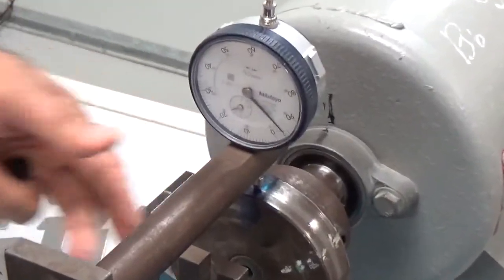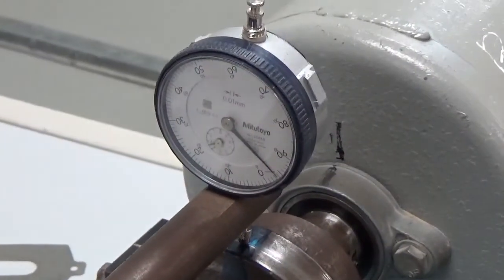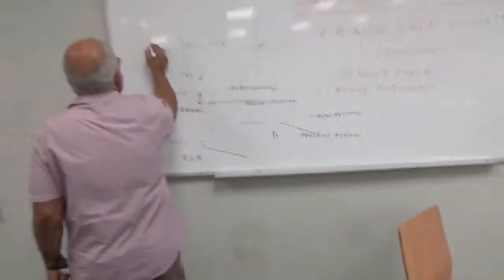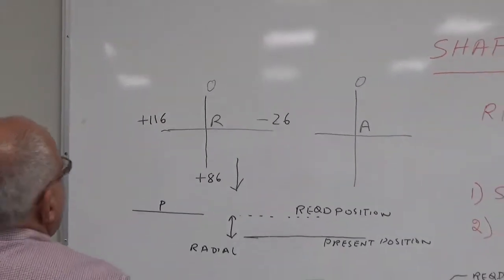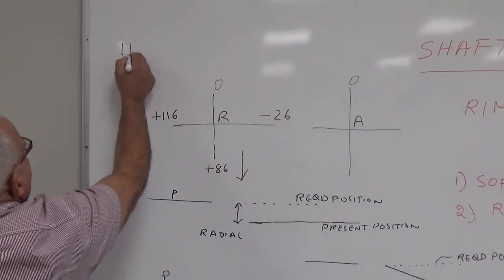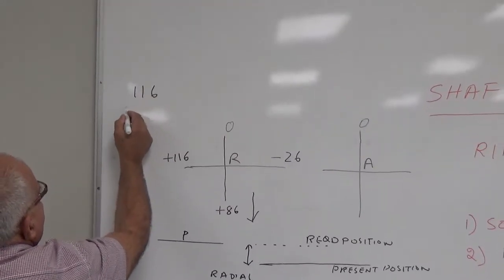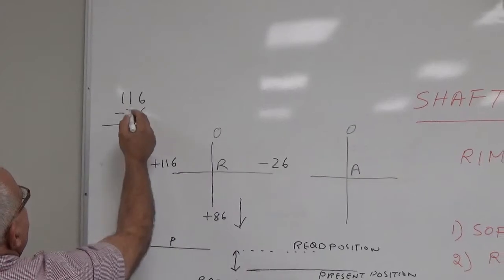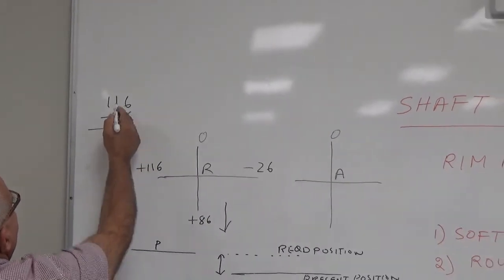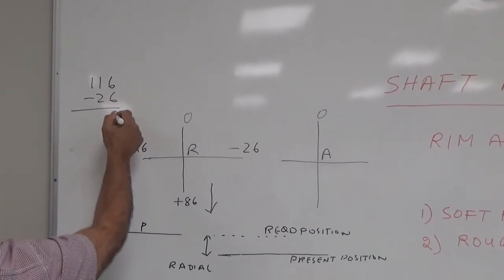So that was 116 plus 116. Now 116 minus 26, this is zero, and minus 96 is zero.